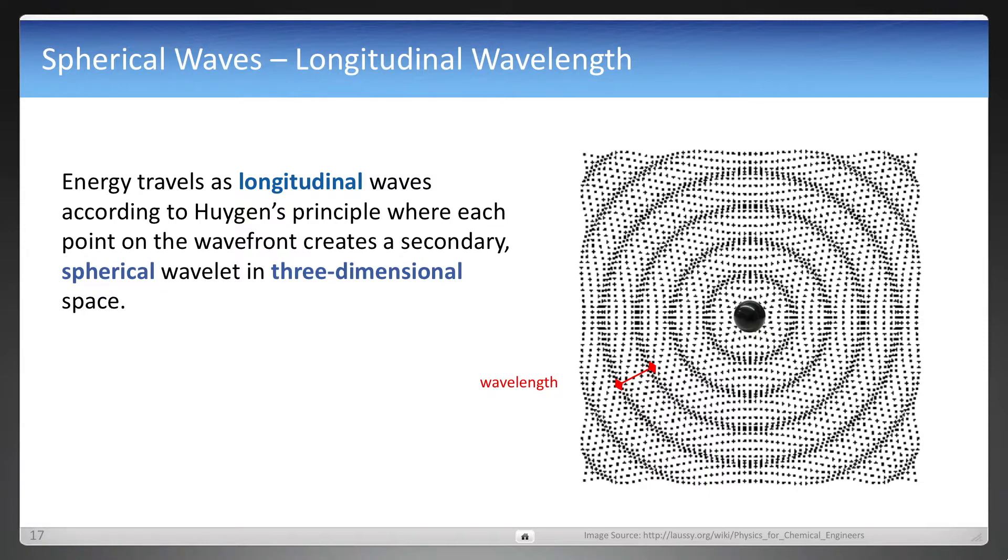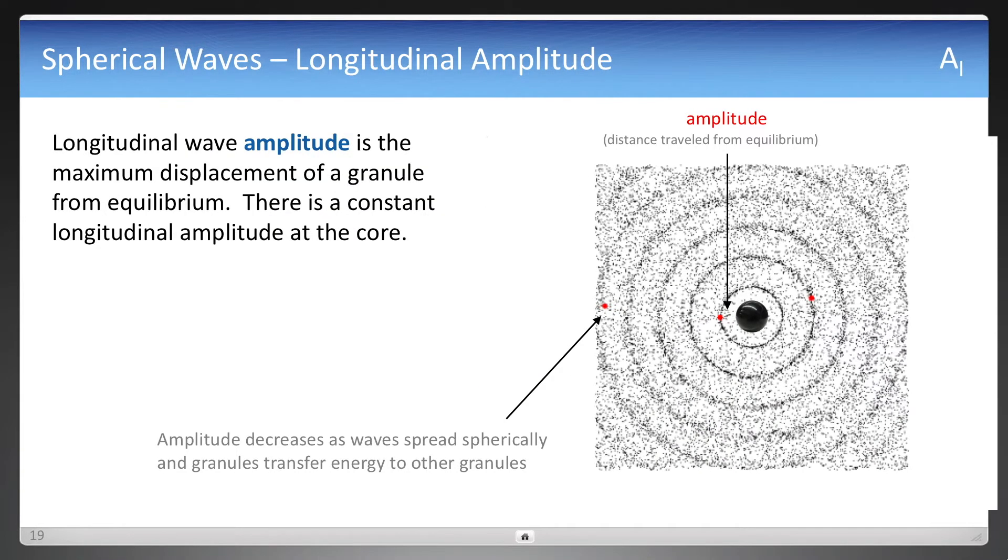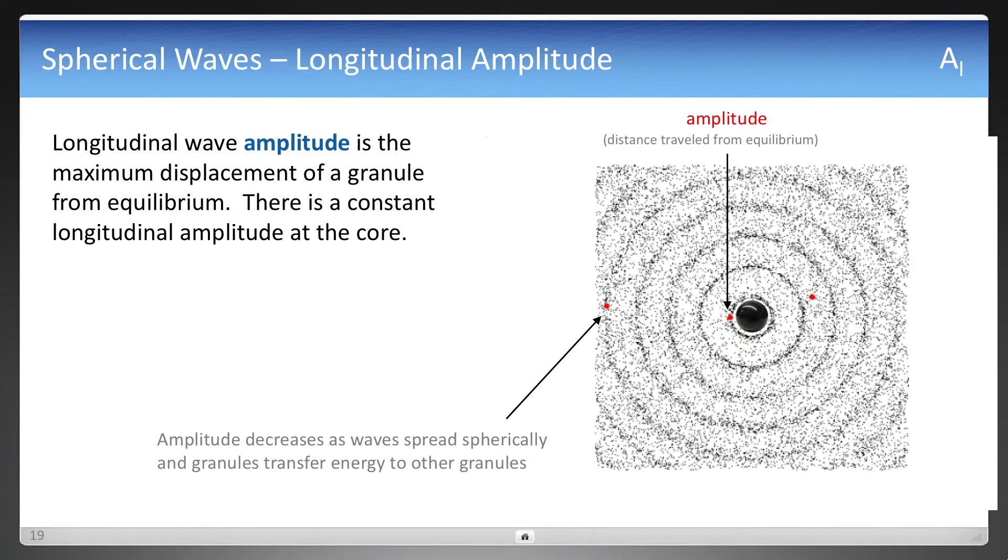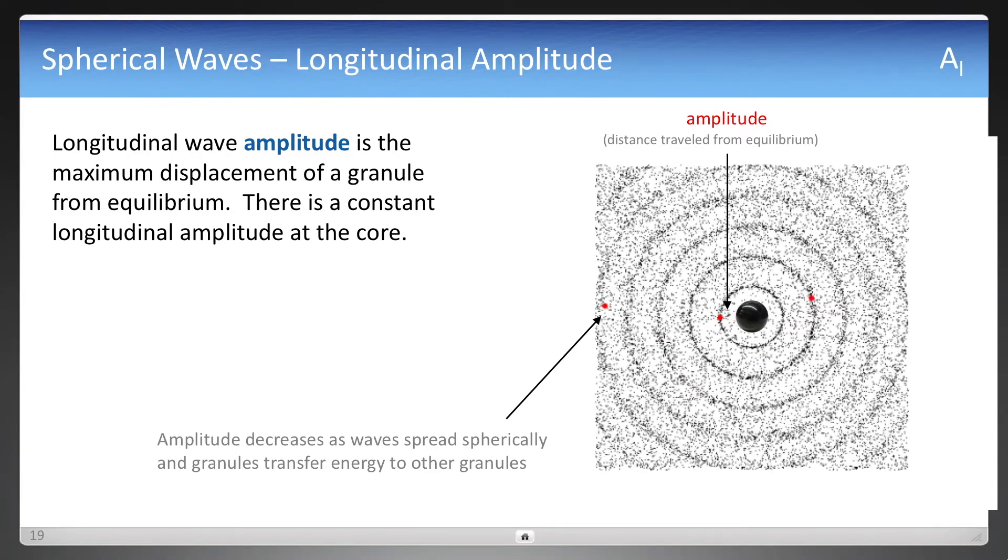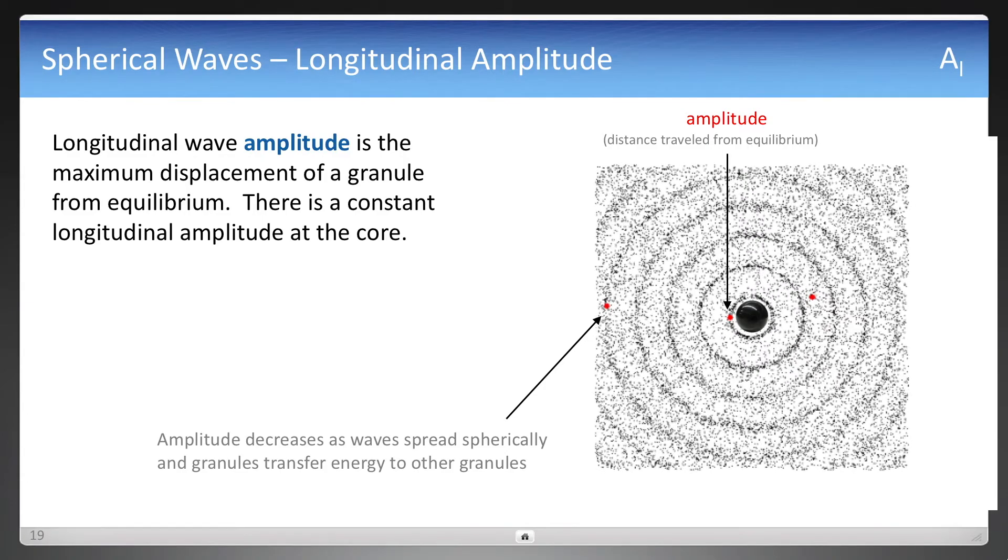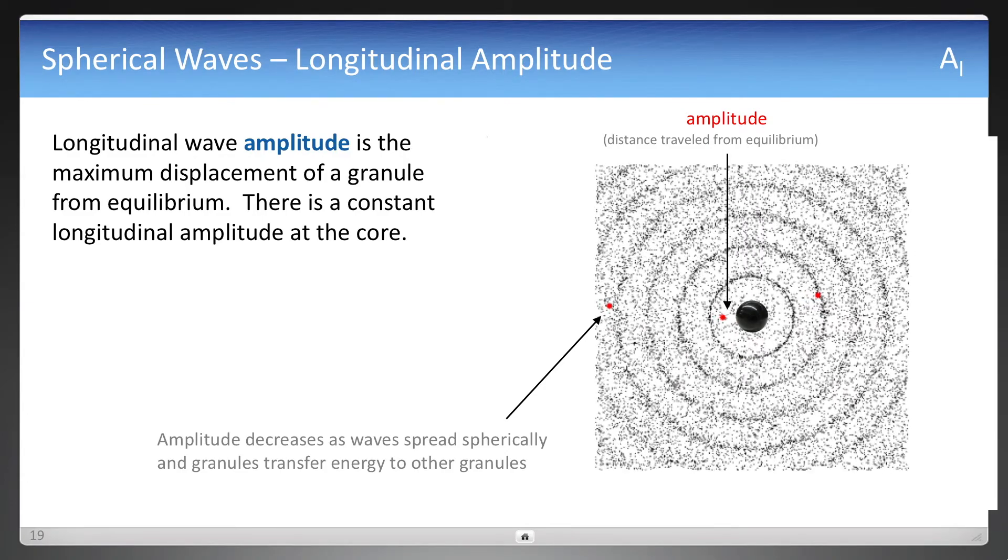So that's a longitudinal wavelength. And amplitude is a little bit trickier to explain. The amplitude here is measured in a red dot, which is the distance that each one of those granules is traveling from equilibrium.